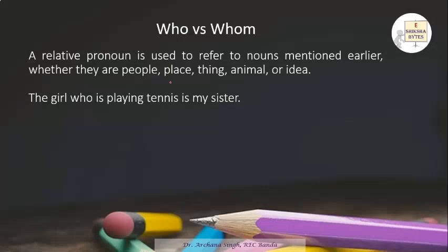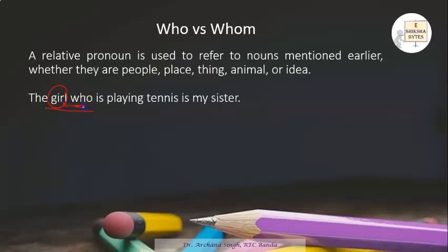To understand deeply, let's study what a relative pronoun is. A relative pronoun is used to refer to a noun mentioned earlier. For example: 'The girl who is playing tennis is my sister.' Here, 'girl' is a noun and 'who' is a relative pronoun referring to that noun 'girl' — so this is your relative pronoun.